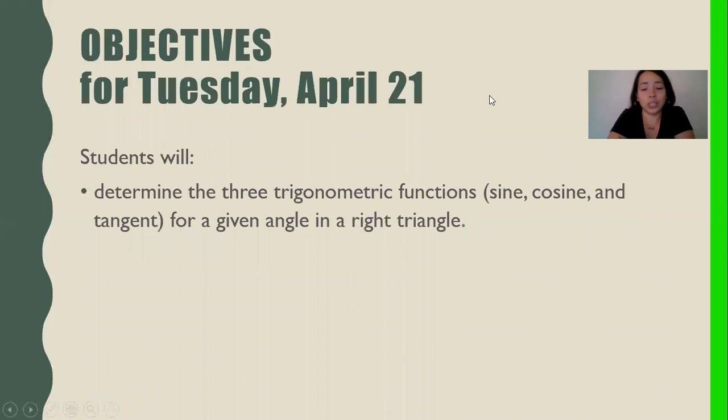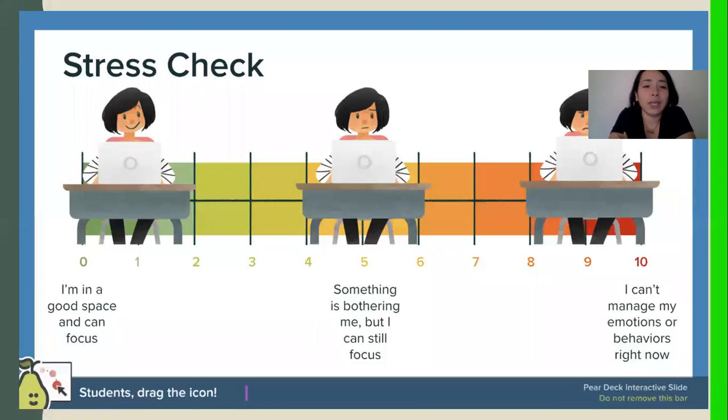So stress check. Let's do a quick stress check from zero to ten. How are you feeling? Zero meaning you're in a good space and you can focus. Ten meaning you're not good at all. Let's go ahead and type that into the chat box.